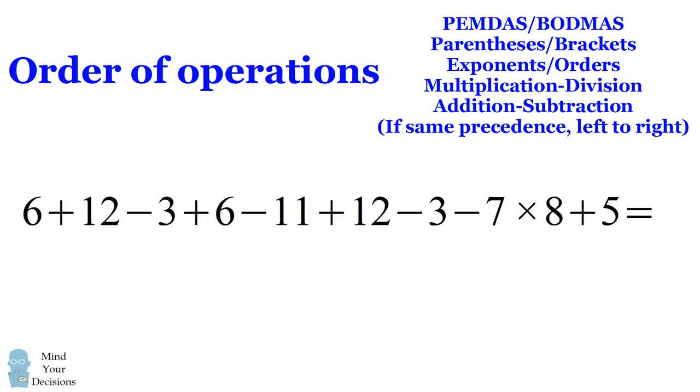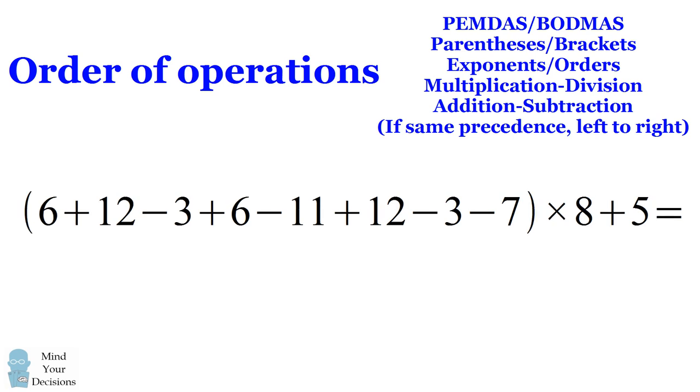One way they could have specified this is they could have put parentheses before the multiplication, so that we knew we should evaluate all the addition and subtraction first. An alternate way is there could have been an image of an equal sign after the 7, so that we knew to evaluate that first as a total result before multiplying by 8.